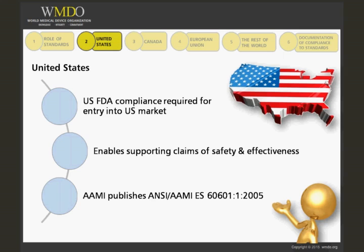which is the third edition standard, but it also includes the U.S. deviations. U.S. deviations are differences in the standards specific to the United States, and they're to meet the requirements of the National Electric Code and some other requirements. AAMI-ES60601-1 has been updated to include the text of Amendment 1 of 2012.